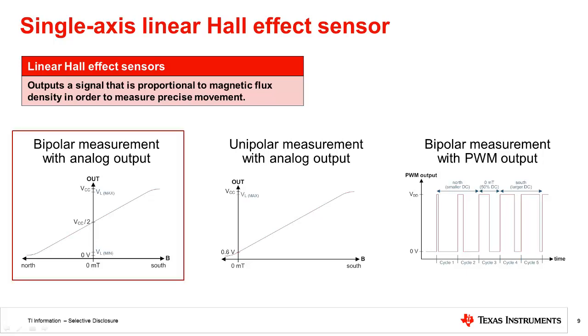The bipolar linear Hall sensor with analog output detects both north and south magnetic poles and outputs a voltage corresponding to the detected magnetic flux density. The unipolar linear Hall sensor with analog output responds linearly to the south magnetic pole incident to the top of the package. This enhances the resolvable accuracy by providing double the voltage range per change in magnetic field.